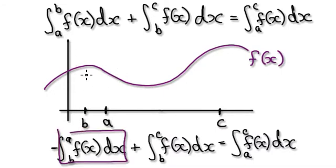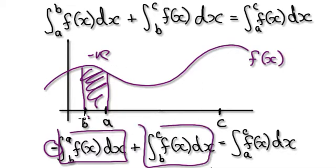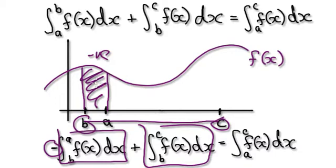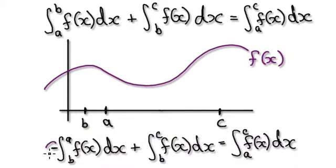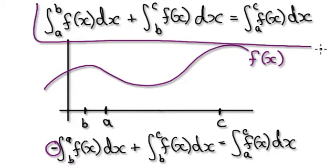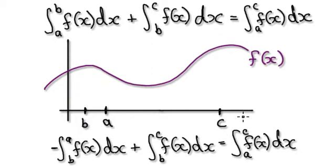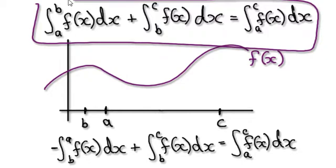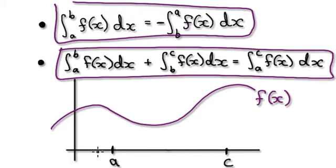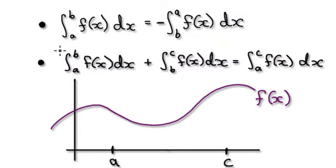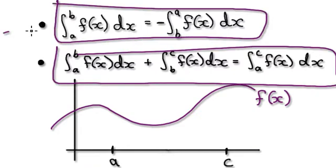Looking at this: this block here is a negative, but then this integral goes from B all the way to C. So when you take the area from B to C and then take away this bit, it gives you A to C. The point is that when you put a negative in front here, this statement will still work even if B is out here somewhere — because we use this switching property. This property here allows the additive interval property to work even if B is outside the interval.